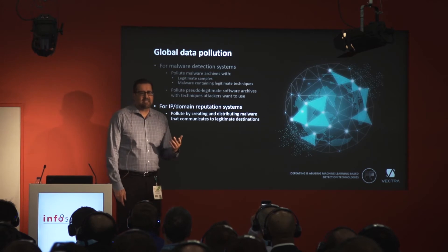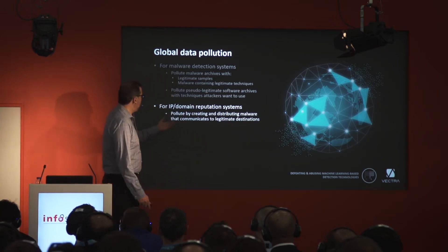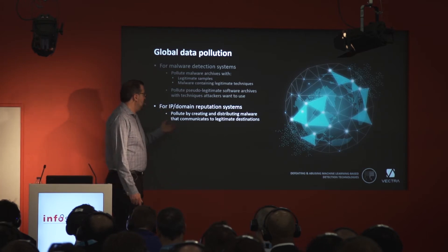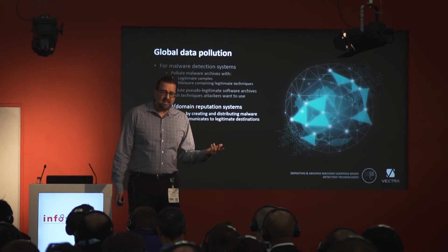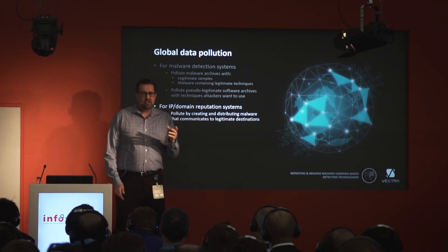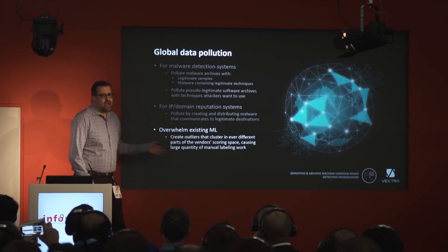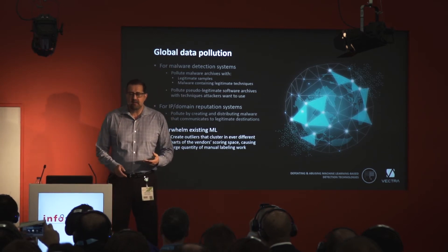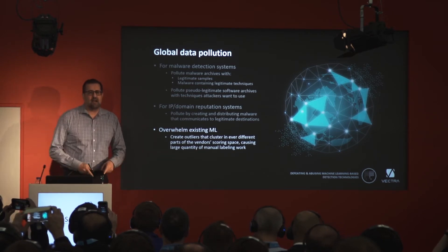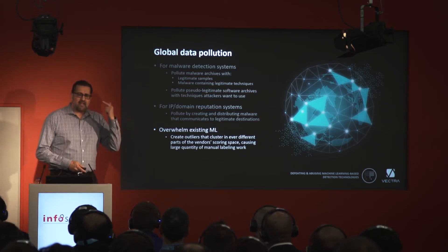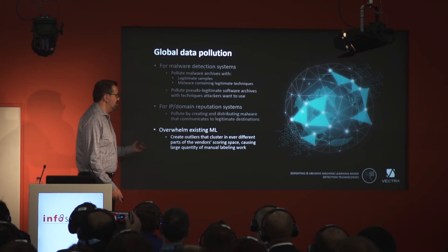IP and domain reputation systems are another aspect. Machine learning can be used to look at executables, communications, and logs. For IP and domain reputation, a key attack is distributing malware that communicates to legitimate places — if all malware suddenly starts communicating with Facebook, does that mean Facebook is bad? You start creating doubts not in the humans necessarily, but in the machine learning. You can also overwhelm existing ML: if you know a product does labeling after clustering, you cause lots of outliers to fall outside clusters, forcing manual labeling and throwing monkey wrenches into the workflow.